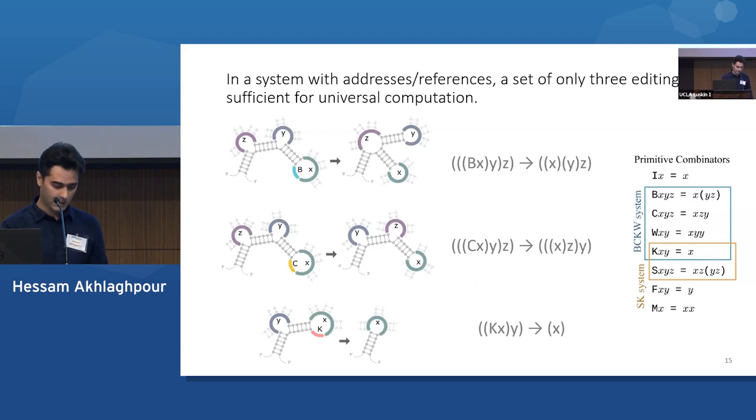So we can come up with a different system that has variables, references, and these three combinators, B, C, and K, without the need for the W combinator.